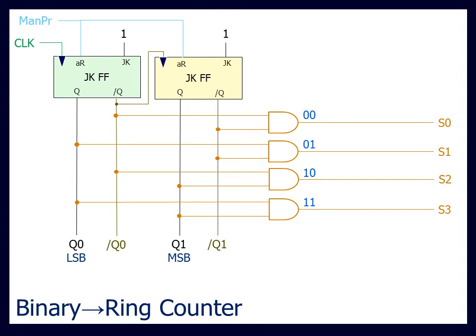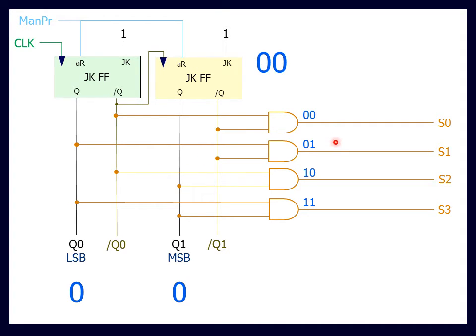Remember that for a binary counter, the flip-flop outputs must be read from right to left. This now means that as the counter counts, the lines of the ring counter will be activated in a cyclic manner.